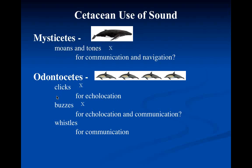The final bit of odontocete communication has to do with whistles. From captive animals, we know that individual animals tend to have a characteristic 'signature whistle' that they learn as a juvenile, and it's probably used as a way of identifying individuals. That particular one from a bottlenose dolphin is fairly high frequency for human hearing.